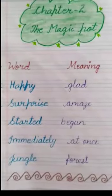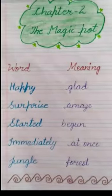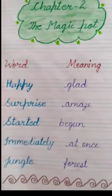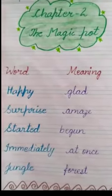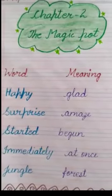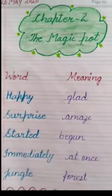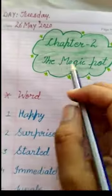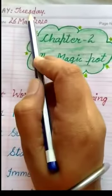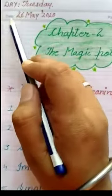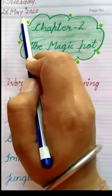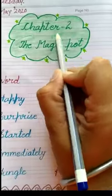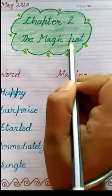Hello students, yesterday we did the exercise of Chapter Number Two, The Magic Pot. So today we are going to start with the question answers and your notebook work. First, you have to mention the day as ever, and again with the date.